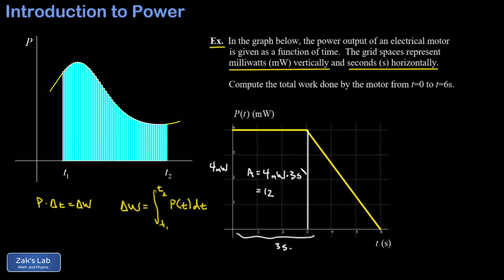That gives me 12, and then I realize that watts times seconds gives me joules, so I have 12 millijoules. The triangle also has a base of 3 seconds and a height of 4 milliwatts, but the area is given by one-half times base times height.